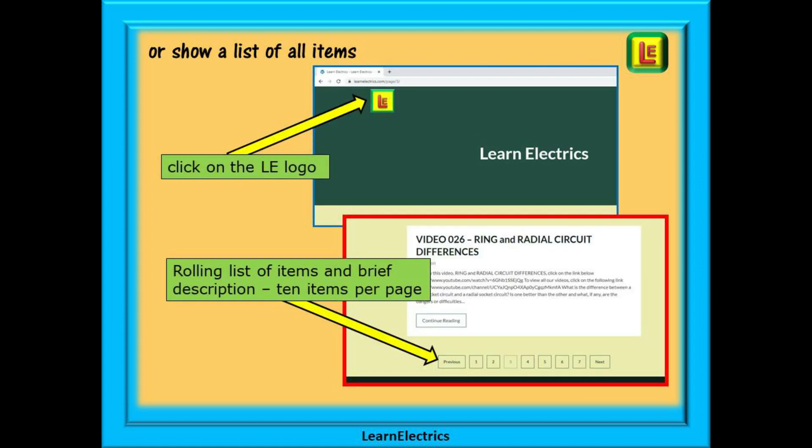Or you can browse through a list of all the available items and videos. To do this click on the LE logo on the top left of the home page and all of our items and videos will be shown. There will be 10 items shown on each page and at the bottom of each page is a page selector page 2, page 3, 4 etc that will bring up the next 10 items or videos in the list.